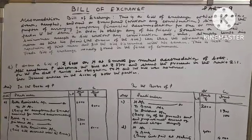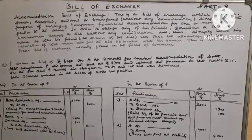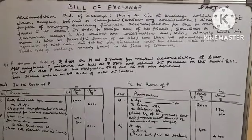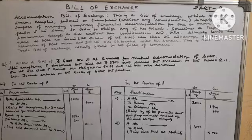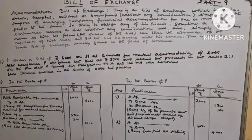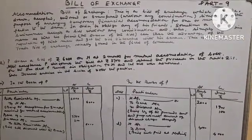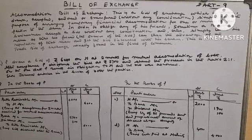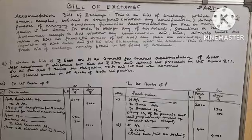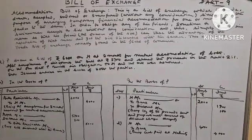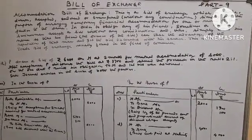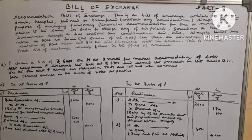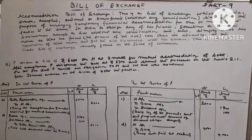Today we will discuss accommodation Bill of Exchange. First, we need to understand what an accommodation Bill of Exchange is. This is a Bill of Exchange that is made, drawn, accepted, endorsed, or transferred without any consideration, simply for the purpose of arranging temporary financial accommodation for one or more of the parties.